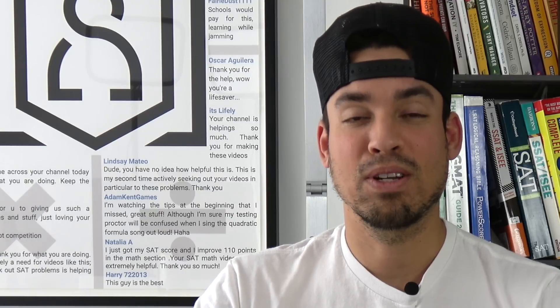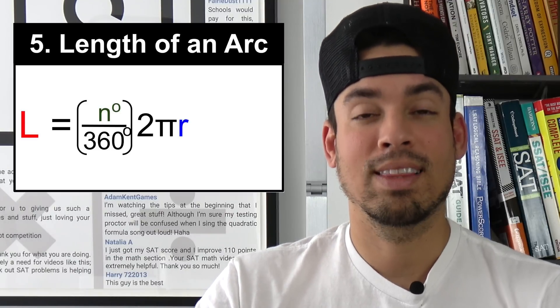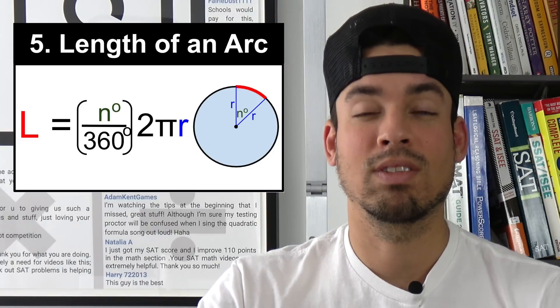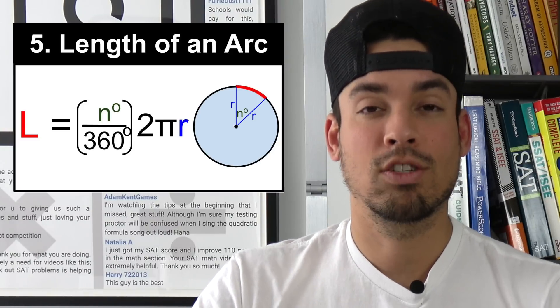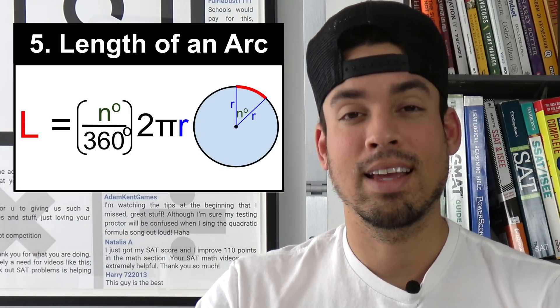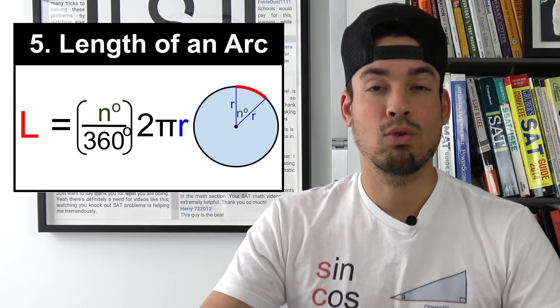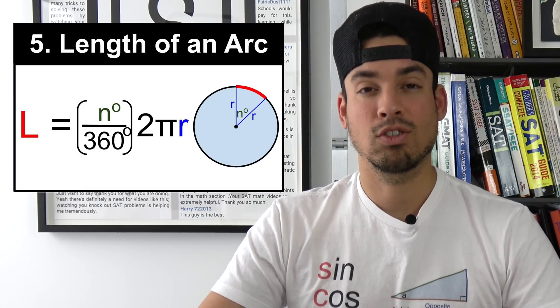Next on the list is length of an arc. Now we calculate arc length of a circle which is kind of like I consider it the crust of a pizza. So it's that outside chunk of a circle and it's just a length calculation. The n value represents the measure of the central angle and of course r represents the radius of the circle.